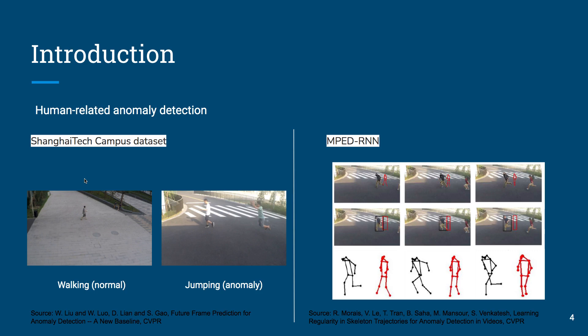Small progress has also been made in the field of human-related anomaly detection. Morai et al. proposed the MPET-RNN architecture for anomaly detection in surveillance videos based on skeleton trajectories, described by local and global body movement. One of the datasets used was the ShanghaiTech dataset, with anomalies such as running and jumping. MPET-RNN uses skeleton motion sequences divided into global and local components to identify human-related anomalous events. The global component indicates the whole body movement, while the local component represents the relative position of the joints to the center of the body.